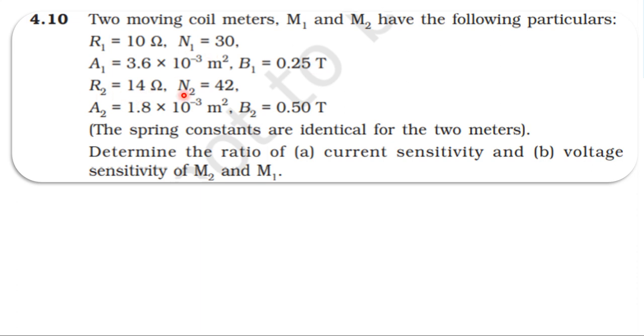Second coil: resistance 14 ohm, number of turns 42, area of the coil 1.8 into 10 power minus 3 meter squared, magnetic induction 0.5 Tesla. The spring constant is the same for both meters.